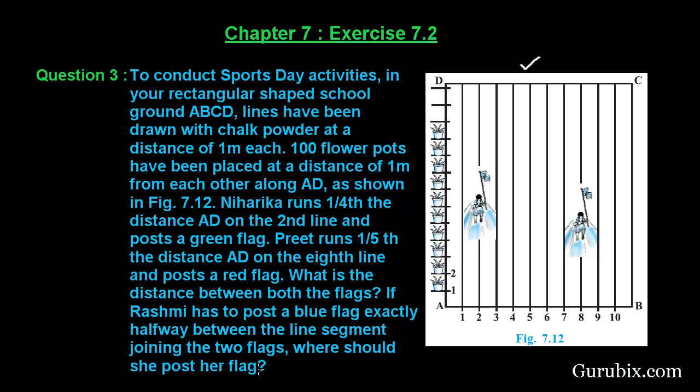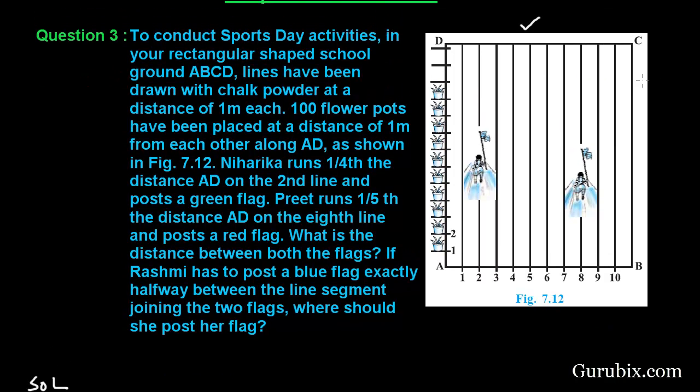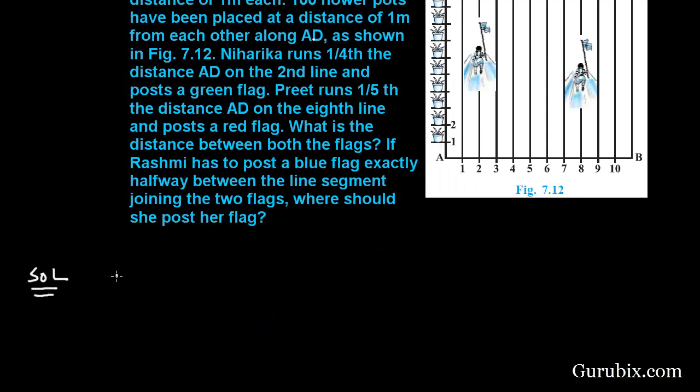So let us see how to solve this question. We have been given that 100 flower pots have been placed at a distance of 1 meter from each other along AD. Therefore, we can conclude that the distance between points A and D is 100 meters.